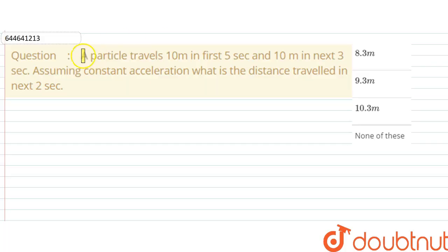Hello, we are given with a question. The question says: a particle travels 10 meters in first five seconds, 10 meters in next three seconds. Assuming constant acceleration, what is the distance traveled in next two seconds?